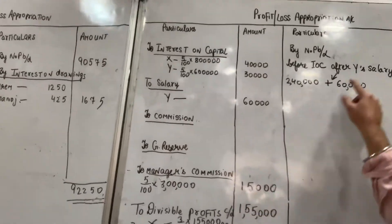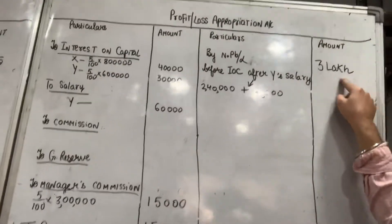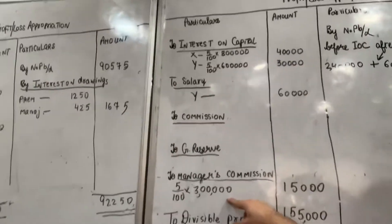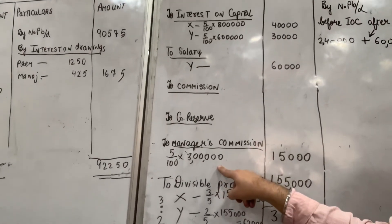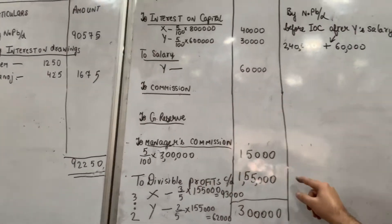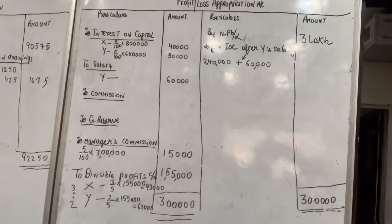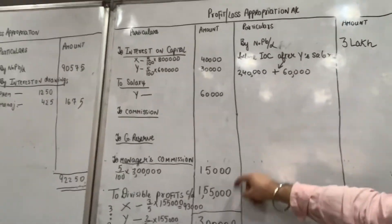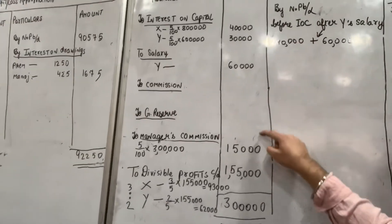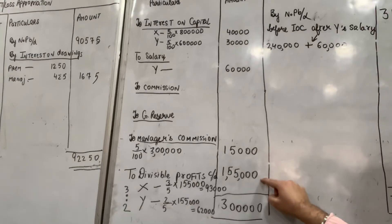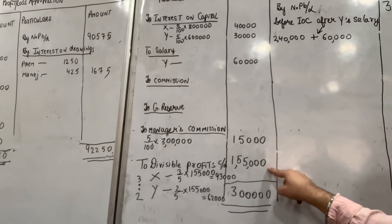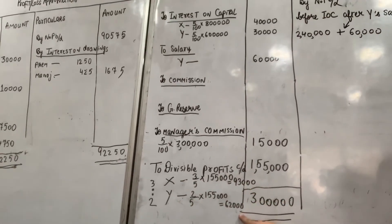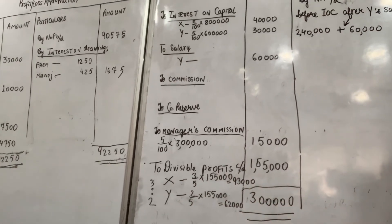After deducting all items, the net profit is taken. Manager's commission is 5% of net profit, which comes to 15,000. Then this is calculated and the total on this side is written as 93,062.